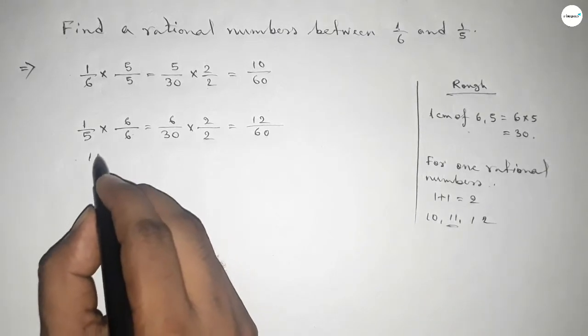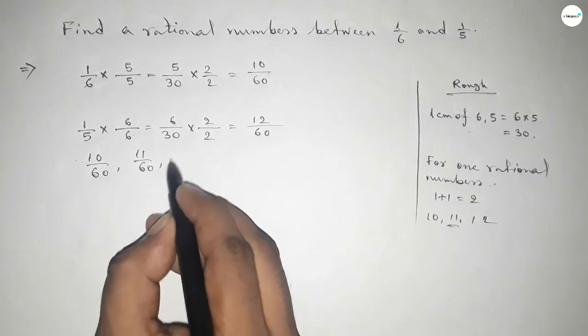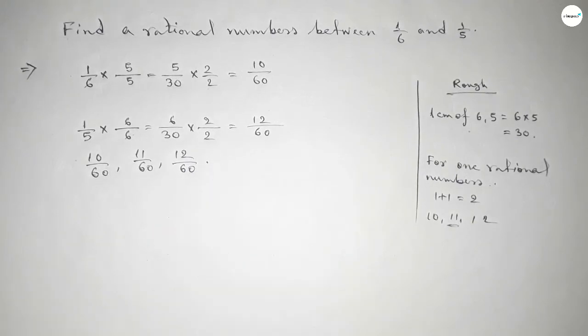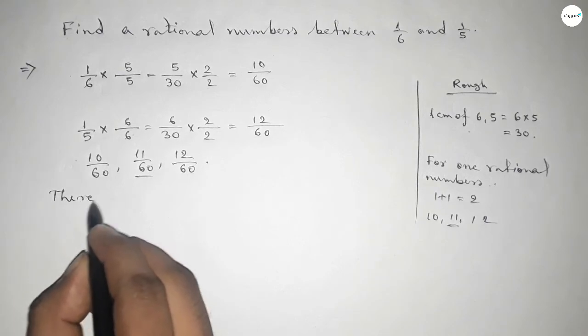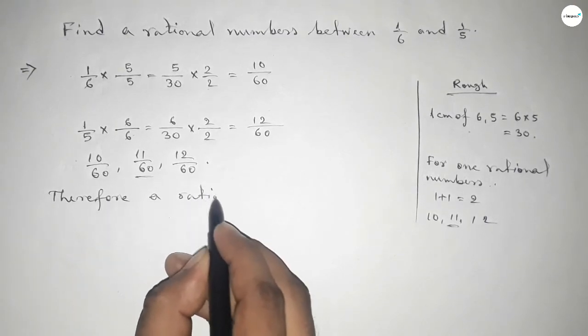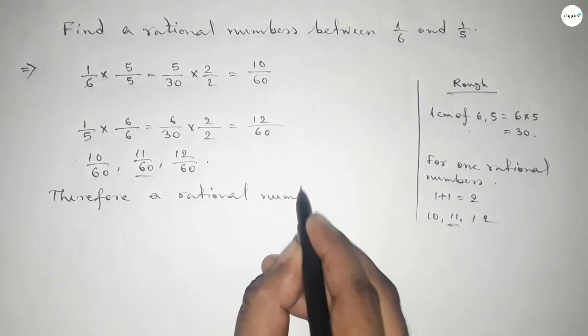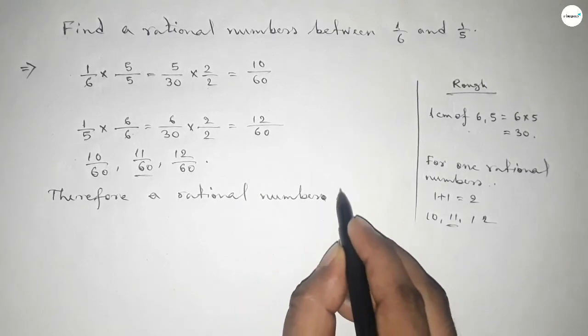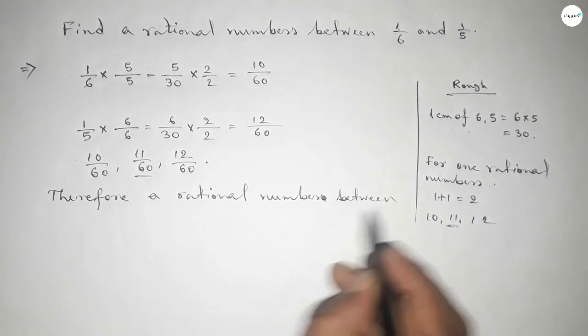And now forming the rational number by this way - this is the required rational number between 1/6 and 1/5. Therefore, a rational number between 1/6 and 1/5 is...